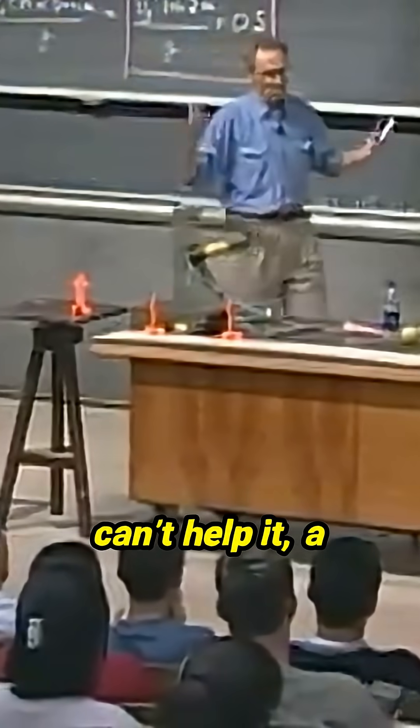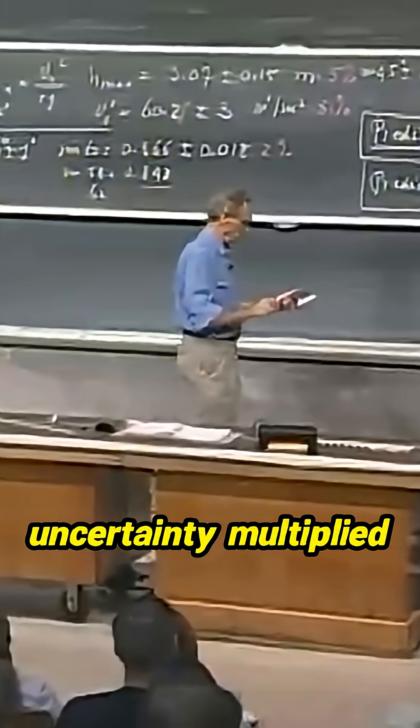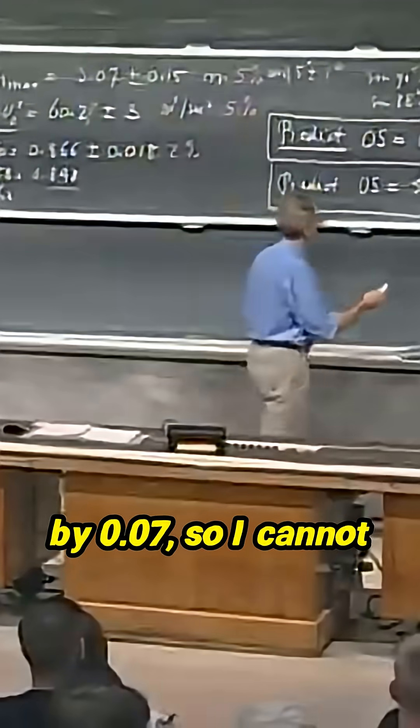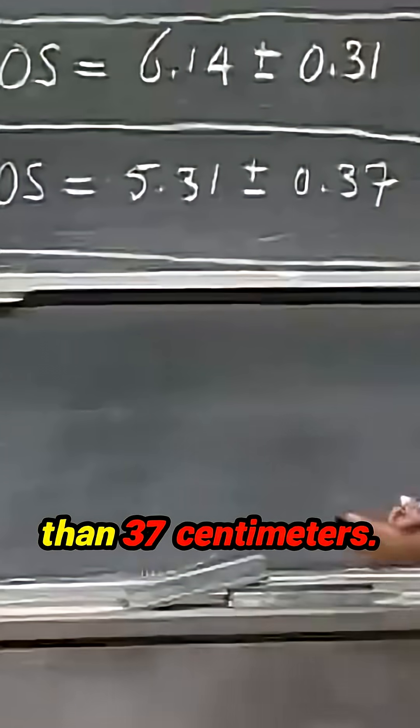That gives me, I can't help it, a 7% error. So I have a 7% uncertainty multiplied by 0.07. So I cannot trust this any better than 37 centimeters.